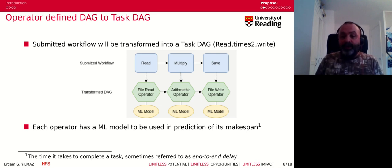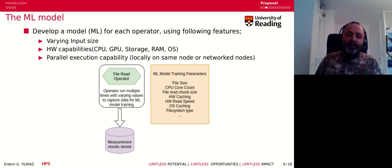This user-created workflow is then transformed into a task workflow where the operators given by the user and their relationship is given as well. Behind the scenes, each operator has a machine learning model to predict the performance of the operator given an input or on a given computational resource that it will be running on. So each operator is associated with a model that can predict its makespan—the time it takes to complete a task, sometimes referred to as end-to-end delay. Once we know which operators are used, we already have these models so they can predict the makespan of the individual task.